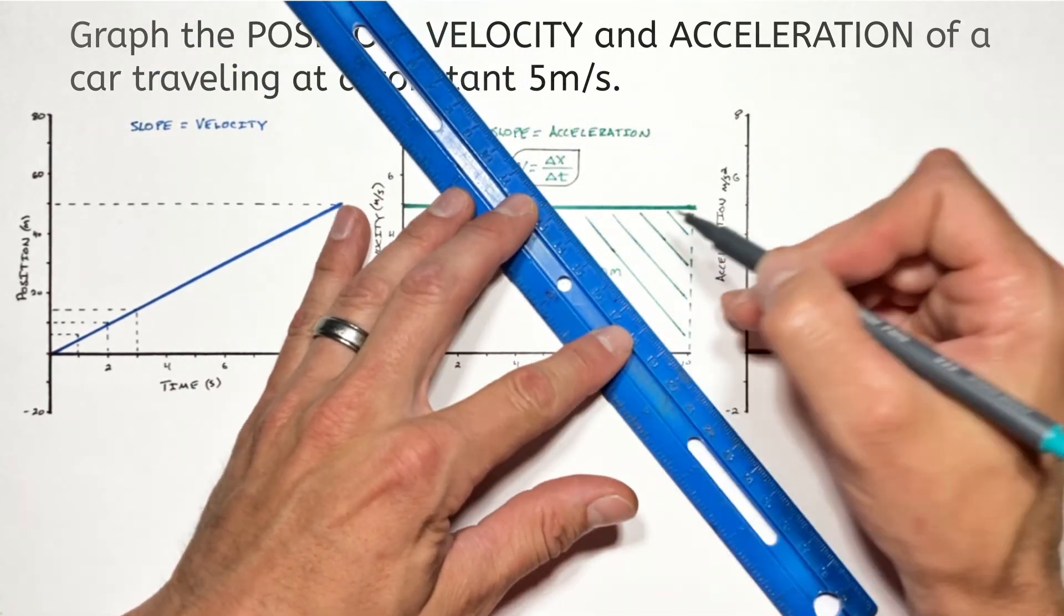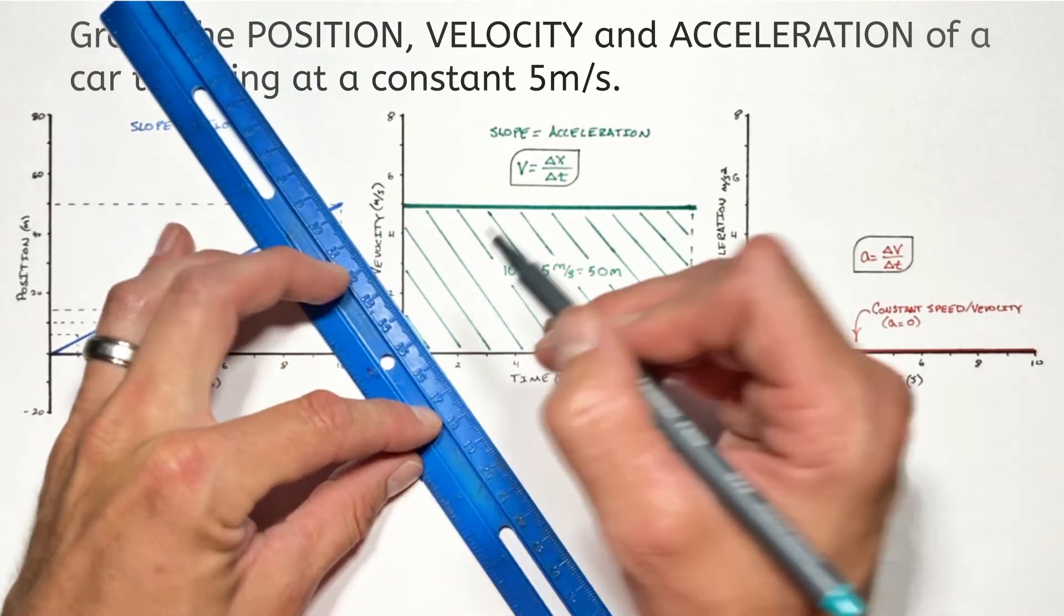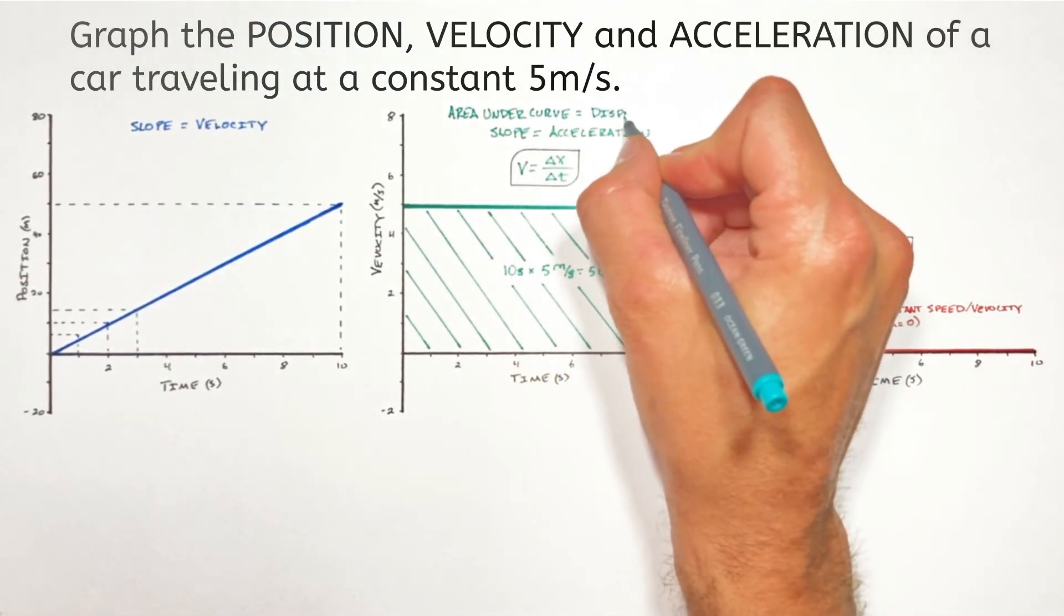Ultimately, what this means is the area under the curve of velocity versus time is equal to the displacement or change in position of the object.